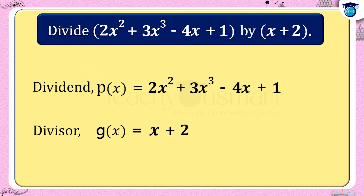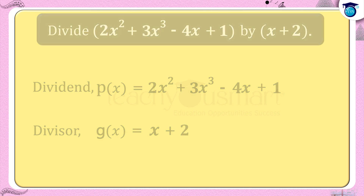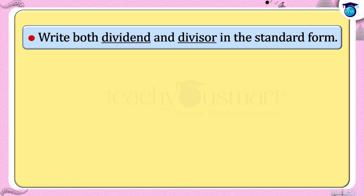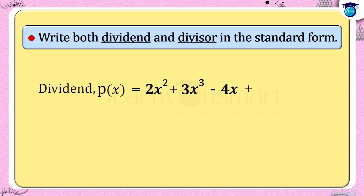Since the divisor is a binomial, let us divide by the long division method. For that we need some steps to solve this problem. Step 1: Write both dividend and divisor in the standard form, that is arrange the terms in descending order of their degree.